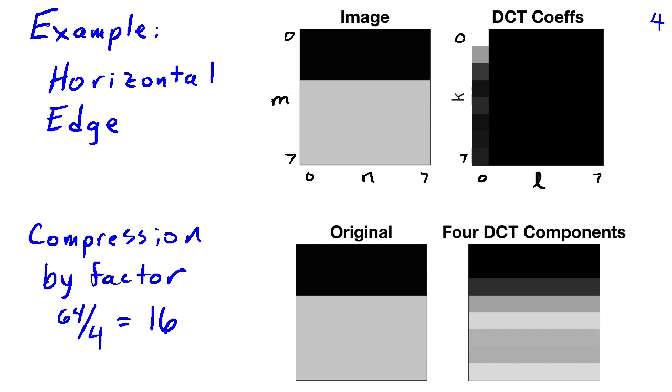Now, the idea of image compression is to use only a portion of the coefficients. So for example, all of these coefficients on the right-hand side, they're all 0. And in the example I'm showing below, we used only four of the DCT coefficients. This one and these three, which were the four largest.